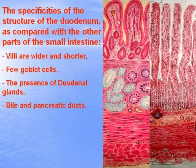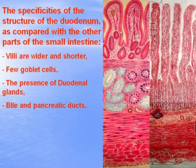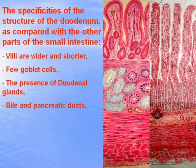The general plan of the small intestine wall is similar throughout, but different parts have some specificities. In the duodenum, the villi and crypts are shorter and wider compared to the jejunum, and there are few goblet cells in the epithelium. In the jejunum and especially the ileum, the amount of goblet cells increases significantly. The presence of duodenal glands in the submucosa — complex tubular-alveolar, mostly mucous glands — is specific to the duodenum.